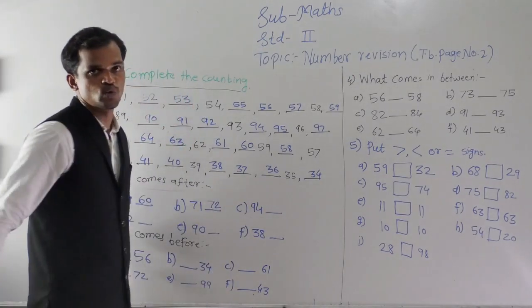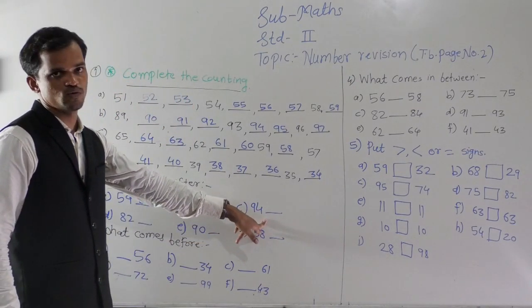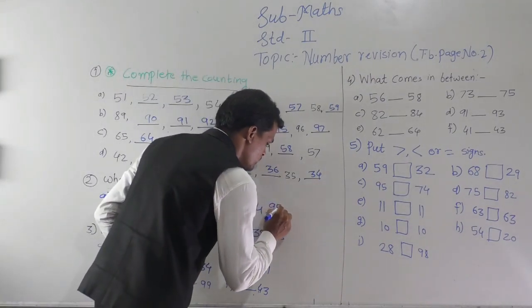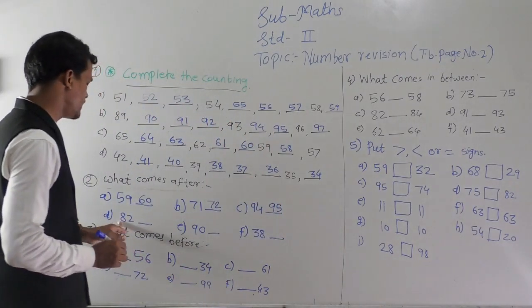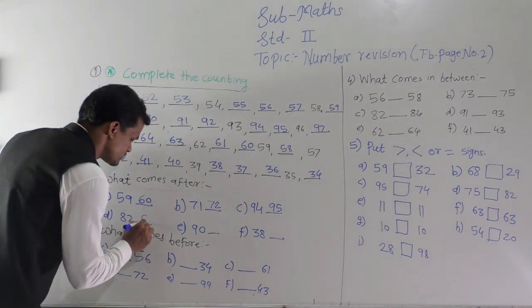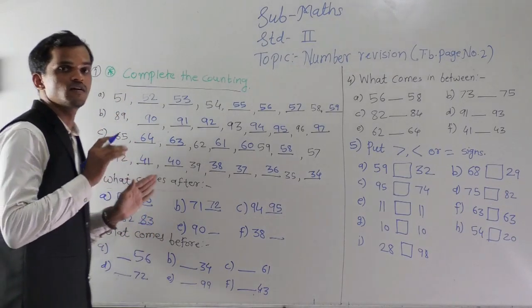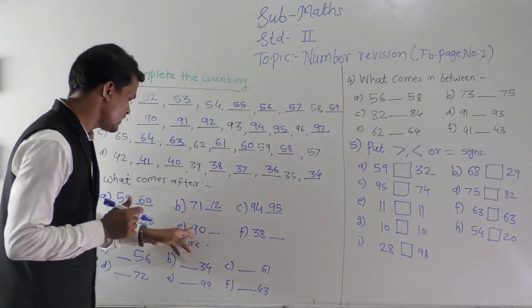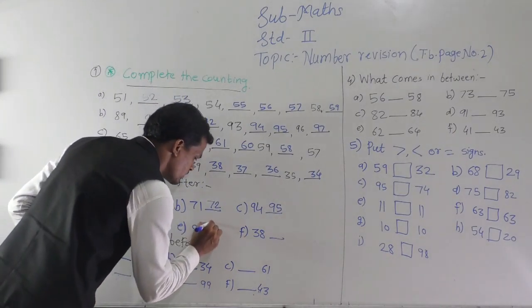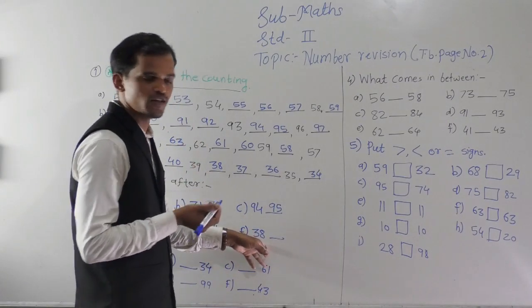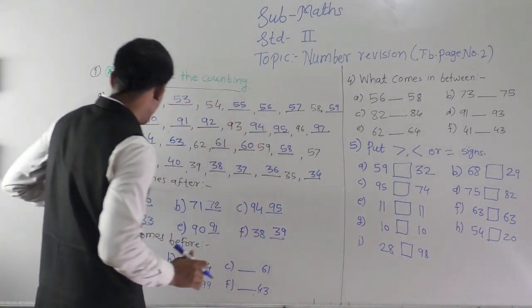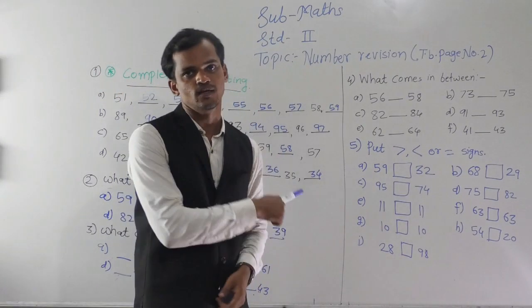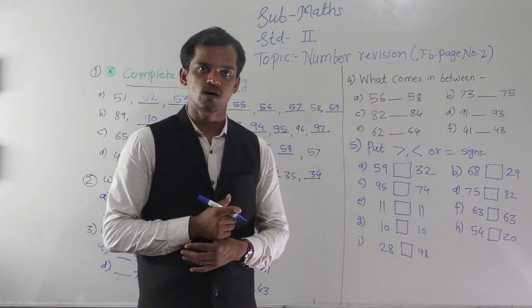Write here 72. Then 94 — after 94 is 95, so write 95 here. Then 82 — after 82 is 83. This is the after number: the number that is one more than the given number. After number means one more than the given number is called the after number.